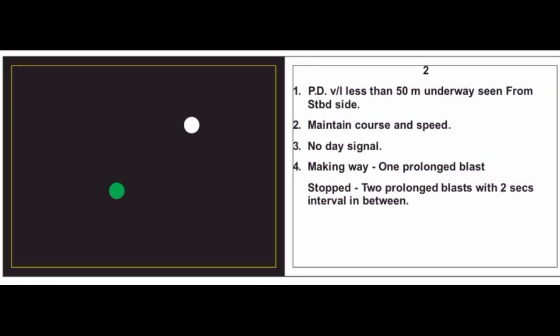Card 2: A simple power driven vessel less than 15 meters, underway, seen from starboard side — it's a green light, meaning we are seeing that vessel from the starboard side. If we see a power driven vessel on our starboard side, then as per the rules of collision regulations it is our responsibility to maintain our course and speed. No day signal for that vessel. Sound signal: making way — one prolonged blast; stopped — two prolonged blasts with two-second interval.